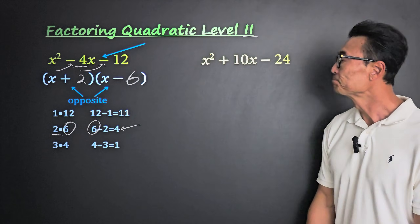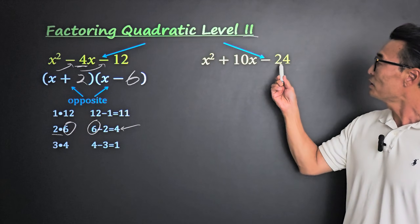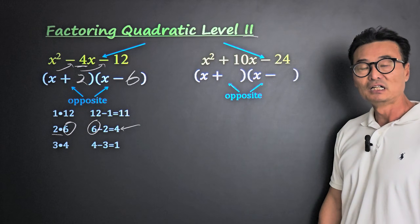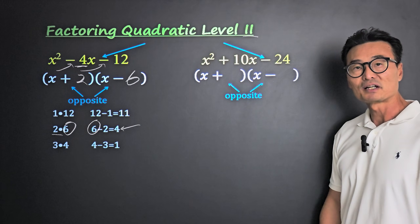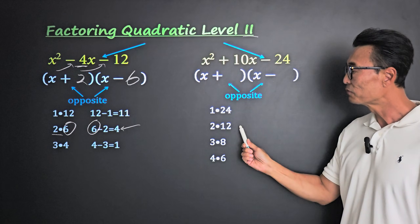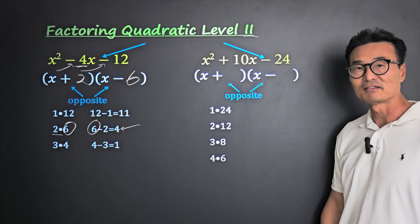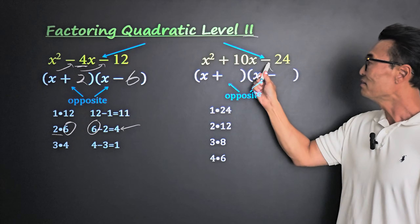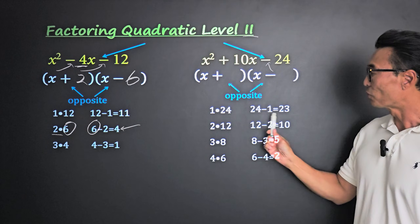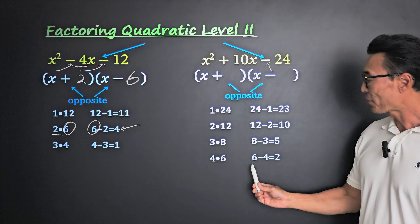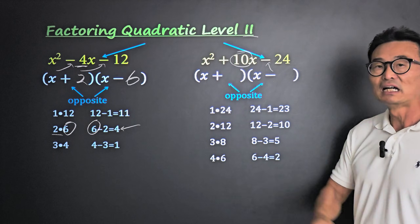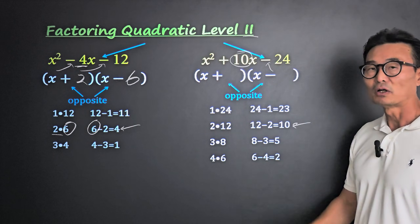Here's another example where the c value is negative, meaning the signs are going to be opposite. We write down all pairs of numbers that multiply to 24: 1 and 24, 2 and 12, 3 and 8, and 4 and 6. Because the third term is negative, we subtract: 24 minus 1, 12 minus 2, 8 minus 3, and 6 minus 4, looking for a difference of 10, which is 12 minus 2.